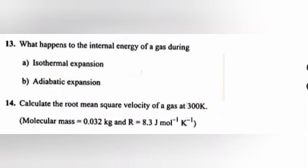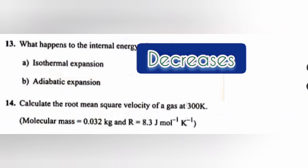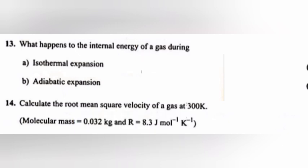Answer: Orbit of a planet is an ellipse with sun at one of its foci. Question 13: What happens to the internal energy of a gas during A, isothermal expansion; B, adiabatic expansion? Answer: A, no change. B, decreases.